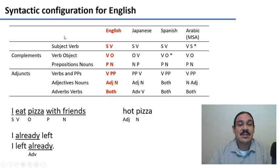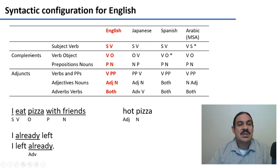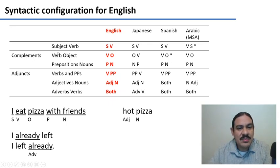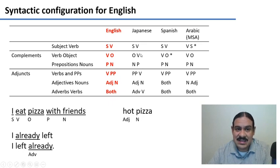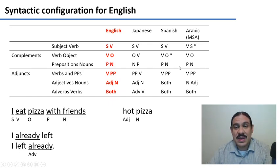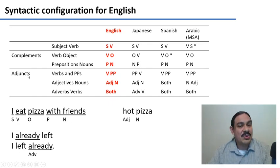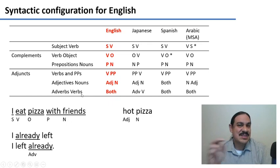For example, you need to decide on the relationship between a subject and a verb — is the subject going to be first, or is the verb going to come first? You need to decide what's going to happen to your complements, the head-complement relationship. Are your verbs going to come before your objects, like in English, Spanish, and Arabic? Or are your objects going to come before your verbs, like in Japanese, where the head is last? This would also affect prepositions and nouns — are you going to have prepositions and nouns like in English, Spanish, and Arabic, or nouns and postpositions like in Japanese? And what about your adjuncts: the relationship between verbs and prepositional phrases, adjectives and nouns, adverbs and verbs?